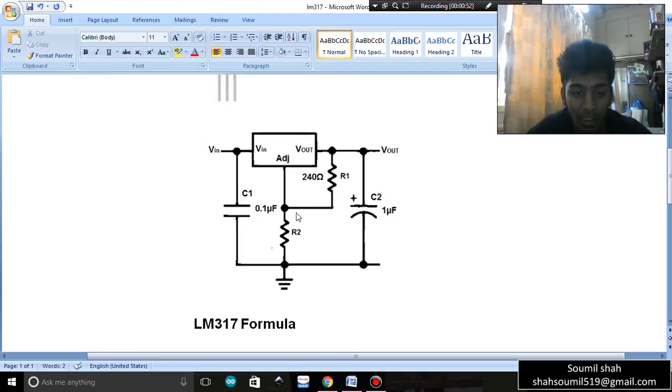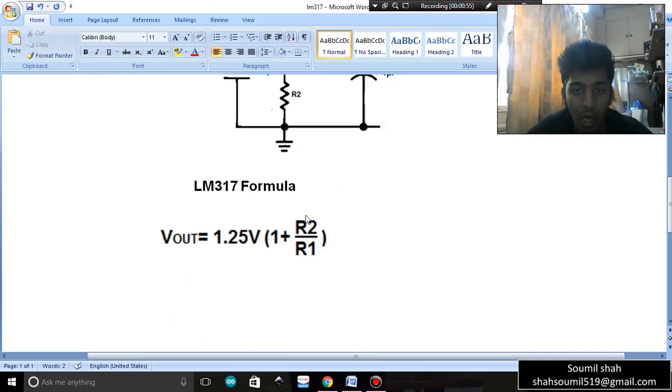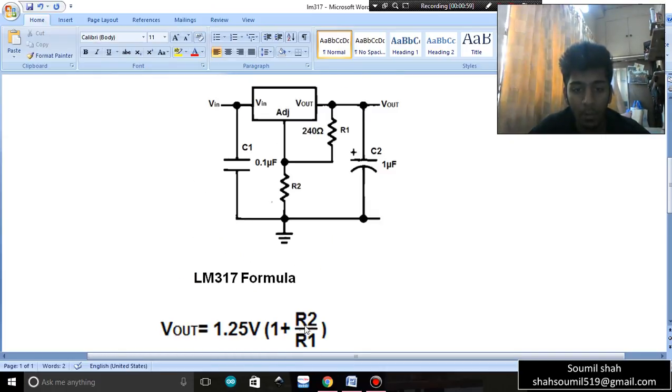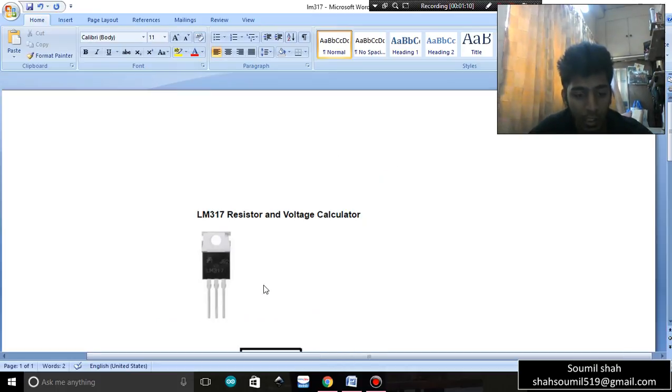So how is it calculated? V out is 1.25 times (1 plus R2 by R1). Since R1 is usually 240 ohms, I can fix a value of R2 so that I can get a value of V out. So let's say I want to design a power supply which provides 5 volts.